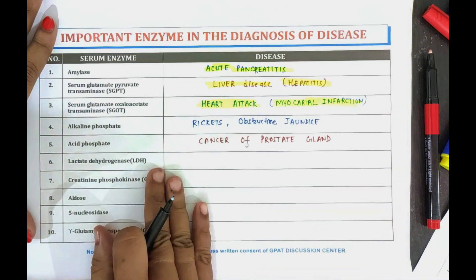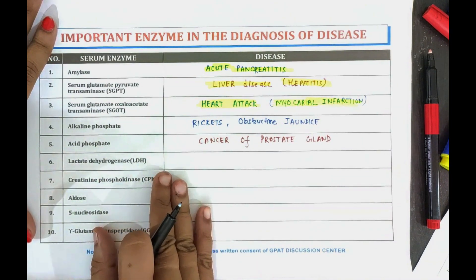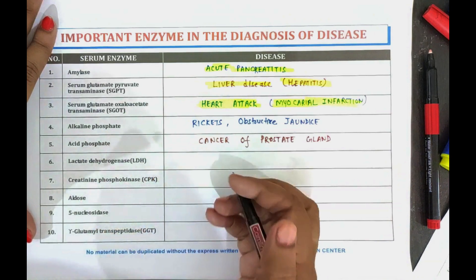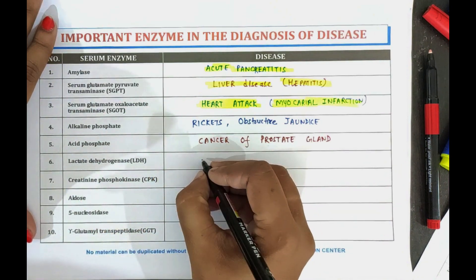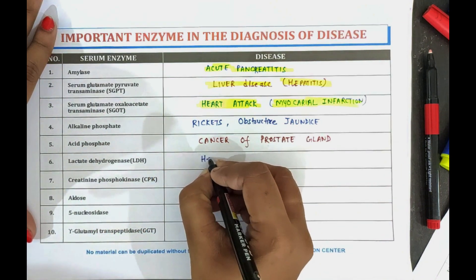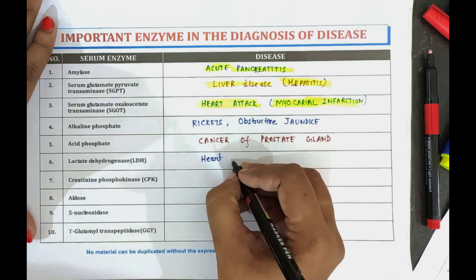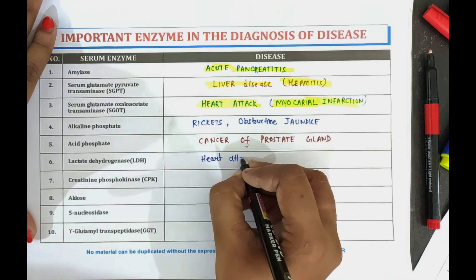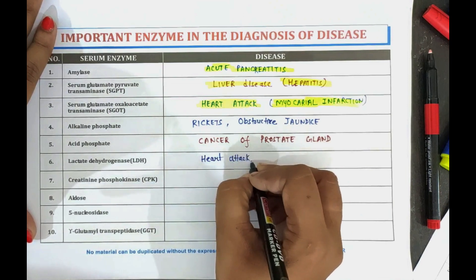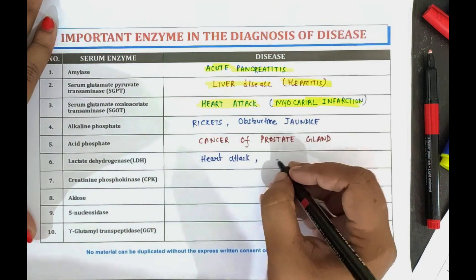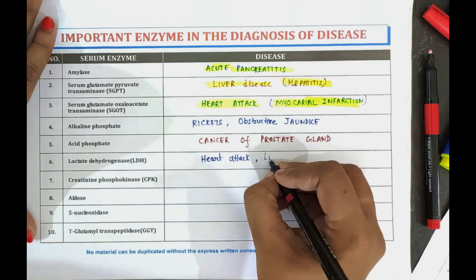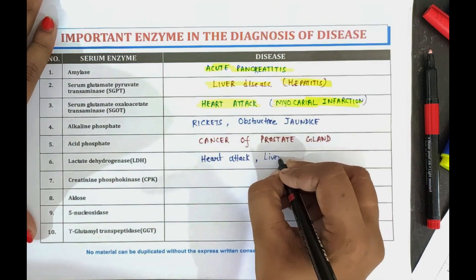Now coming towards the next one, which is lactate dehydrogenase, that is LDH. The LDH enzyme is used to detect heart attack and also liver disease.